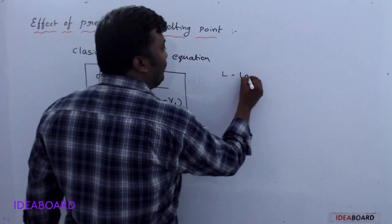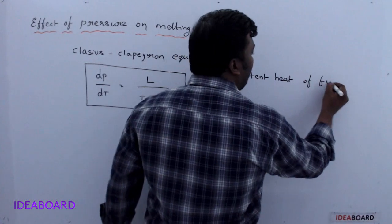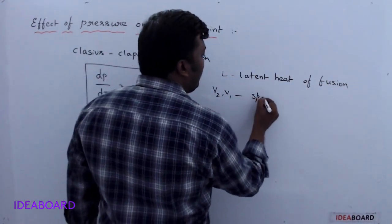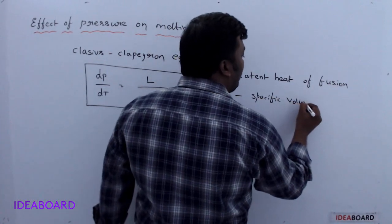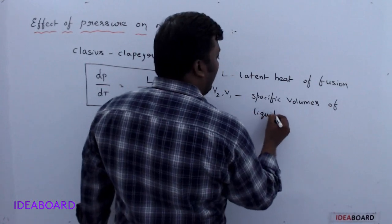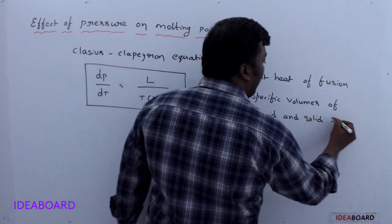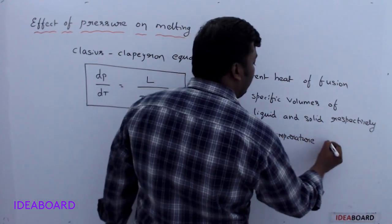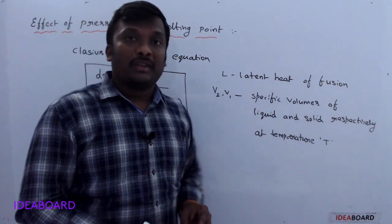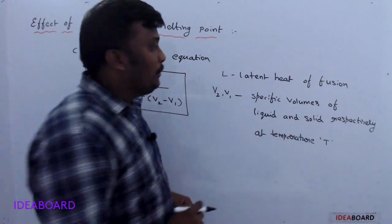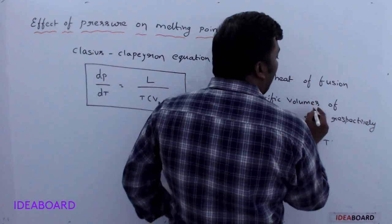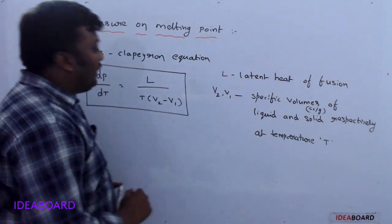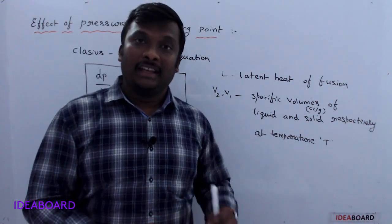Here, dP/dT indicates how pressure changes with melting point. L is the latent heat of fusion. V2 and V1 are the specific volumes of liquid and solid respectively, at temperature T. Specific volume means volume per mass, with units of cubic centimeter per gram. The derivation of the Clausius-Clapeyron equation is beyond the PU level, so just remember this form.